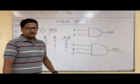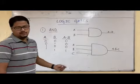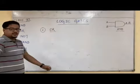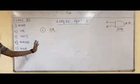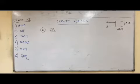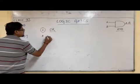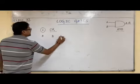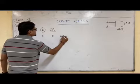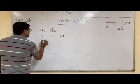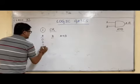Here we are discussing only the circuit part. Now let us discuss about the OR logic gate. OR means plus. We will see a small example once more: A, B, A plus B.